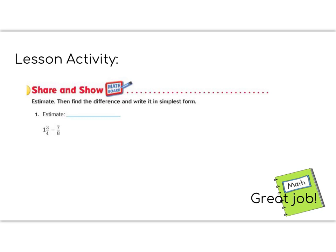Great job so far, 5th graders. It's time for the lesson activity. Today's activity is the first problem in the share and show section of your math pages — you can do your problems right there on the page and be prepared to show your teacher at the teacher table. We are going to subtract 1 and 3 fourths minus 7 eighths. Let's estimate: 1 and 3 fourths is almost 2, and 7 eighths is almost a whole, so 2 minus 1 gives us an estimate of about 1.